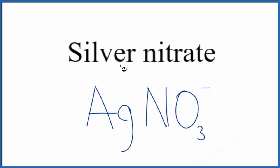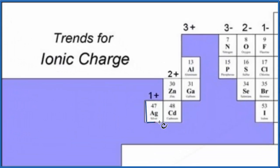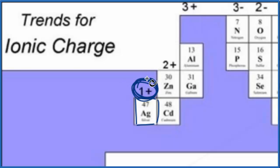Silver is a transition metal on the periodic table, but silver always has a 1 plus ionic charge. Let's take a look at the periodic table for the ionic charge on silver. We see silver here — Ag — and although it's here with these transition metals, it always has a 1 plus ionic charge. Something good to remember as well.